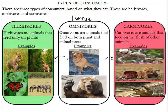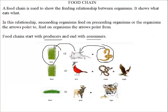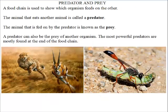In a food chain, one organism eats another organism. The mouse eats the plants, the snake eats the mouse. We also have the bird feeding on the plants, the snake feeding on the bird, and then the eagle feeding on the snake.